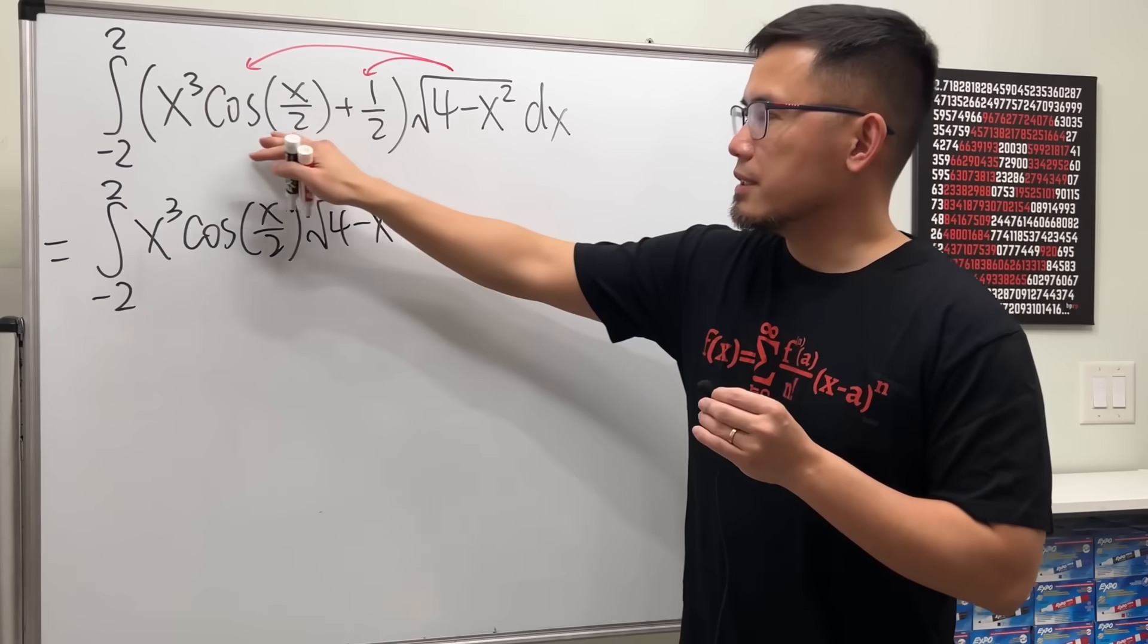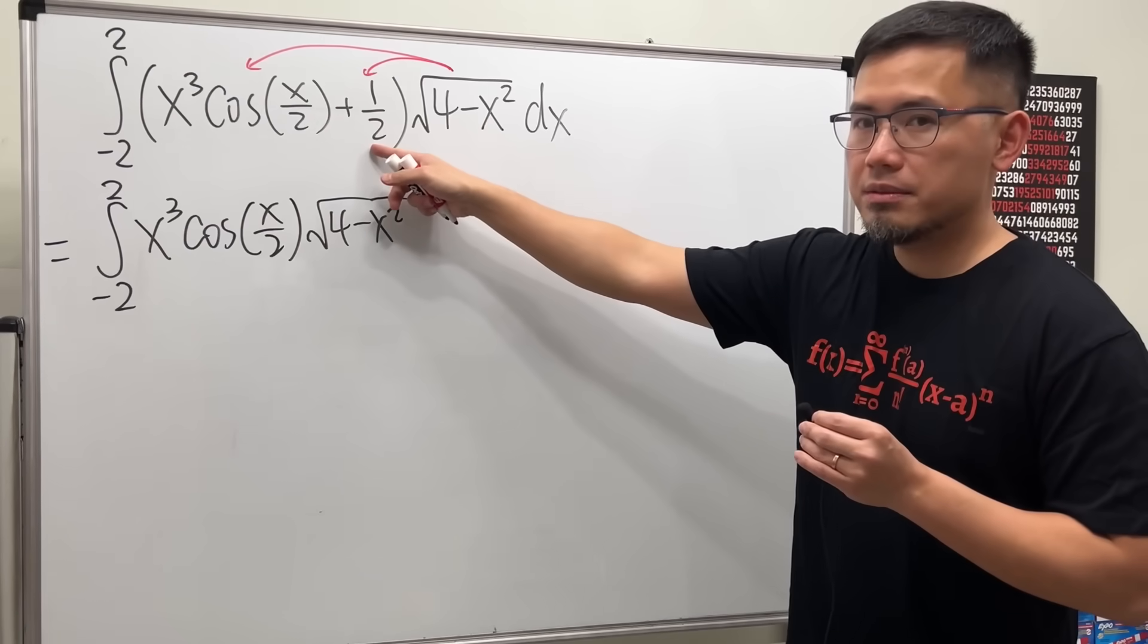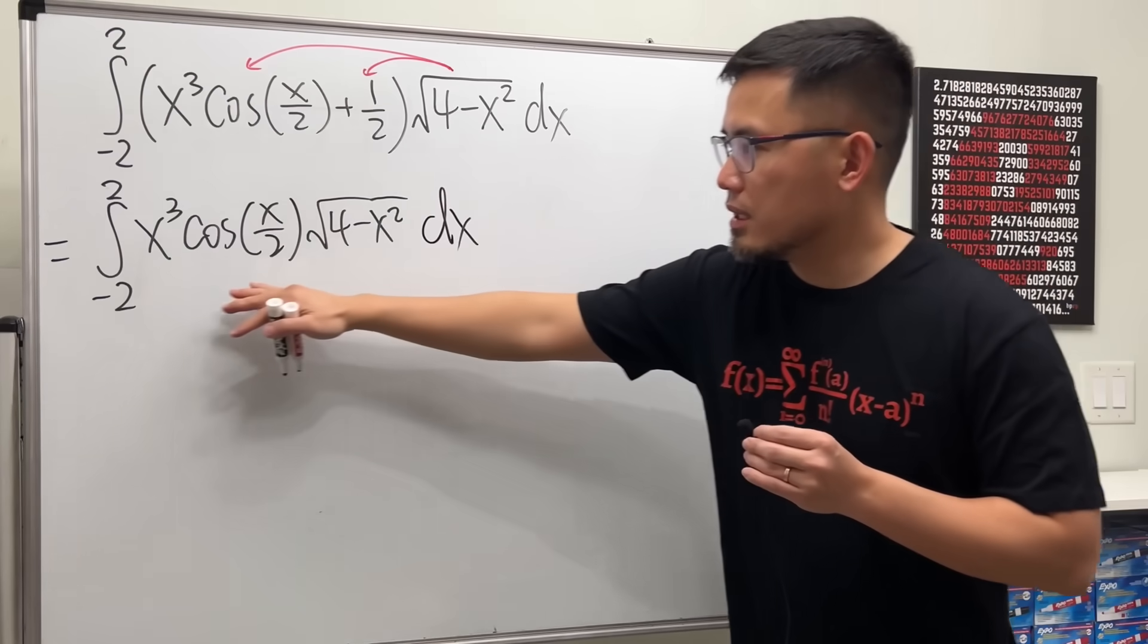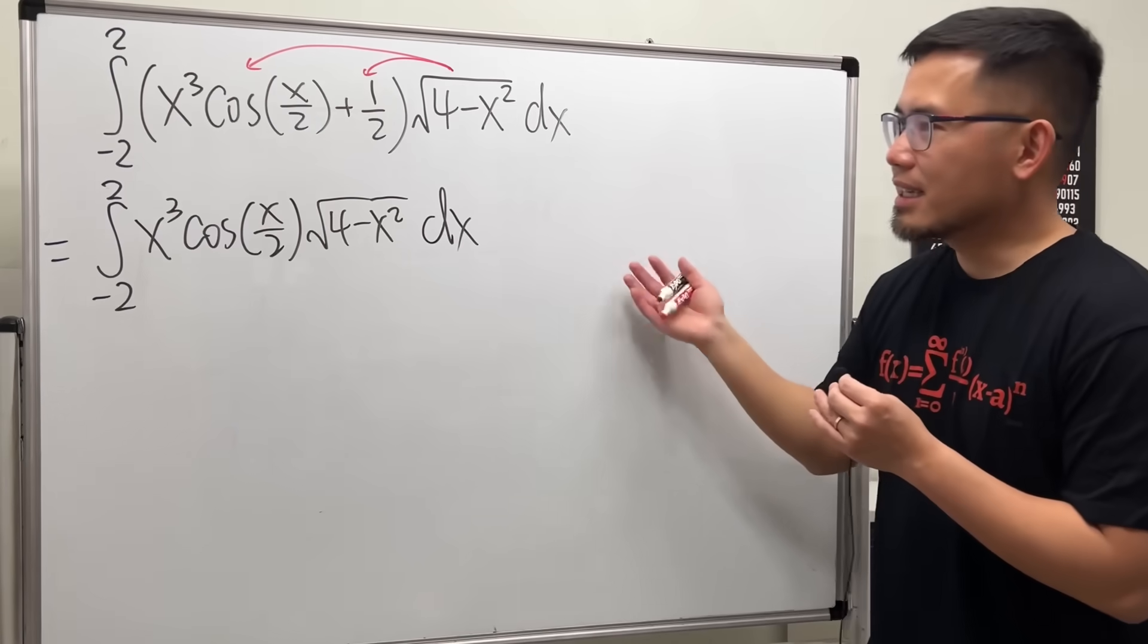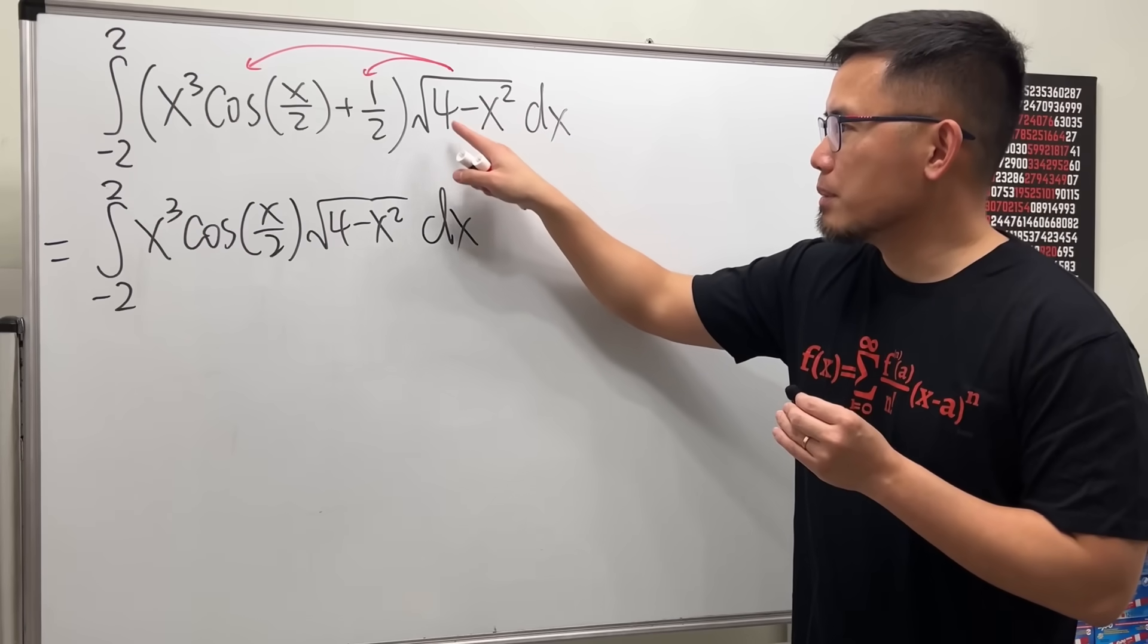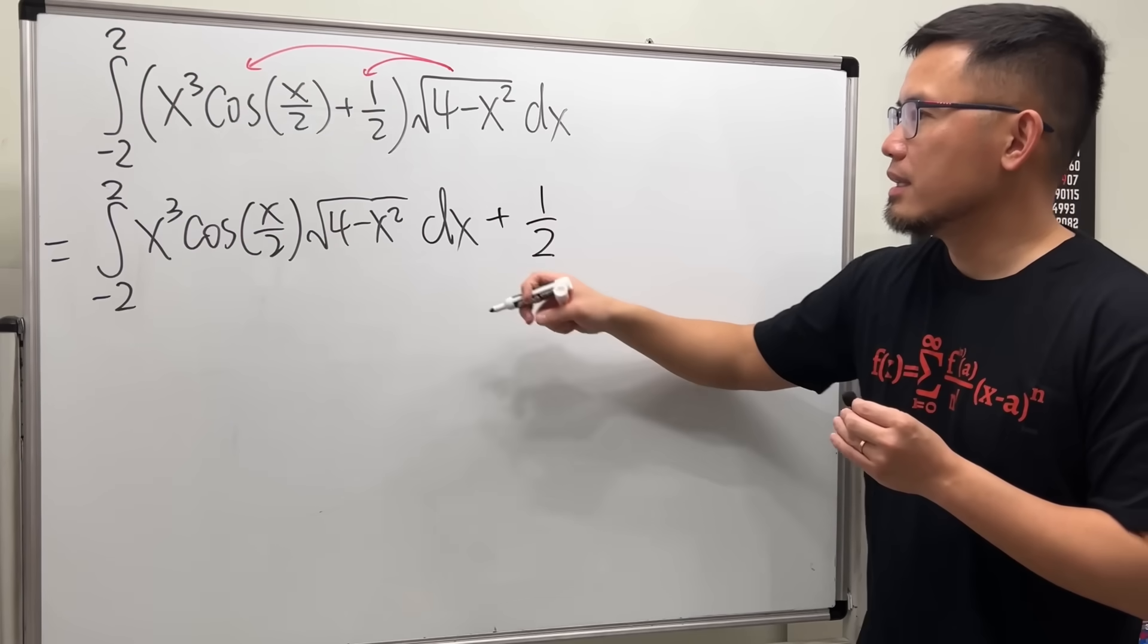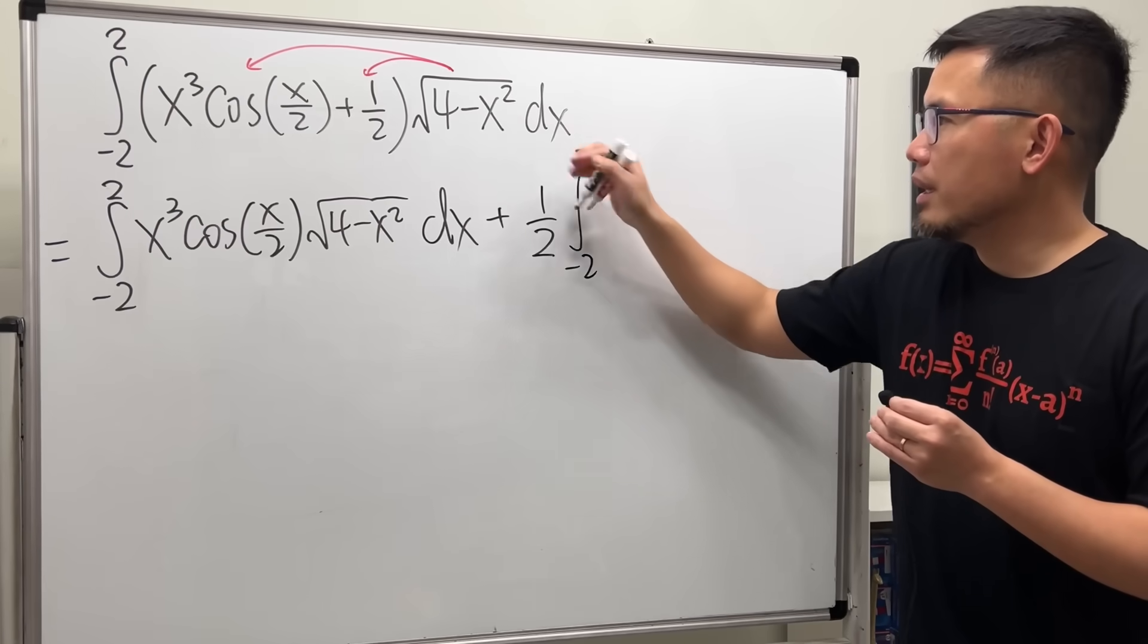That's the first part, and then we will add the second part, this times that. Let's close this integral right here first because this integral requires a technique and then the second one requires a different one. For the second one, I would just multiply this and that, so we add the one half can be put in the front, and then we have the integral going from negative 2 to 2.